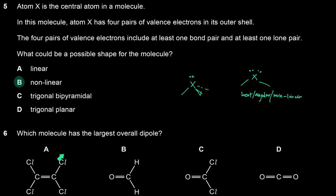Which molecule has the largest overall dipole? The first molecule does not have a net dipole — the two Cl groups on each side cancel each other out. So we have four polar bonds but it's not a polar molecule; all the net dipoles cancel, so there's no net dipole.